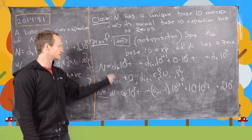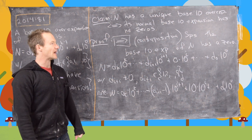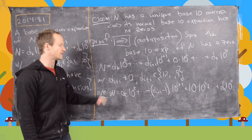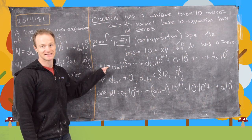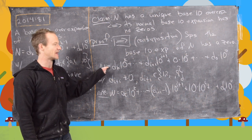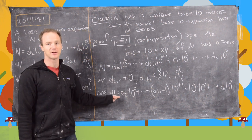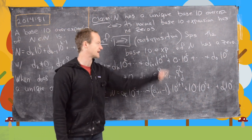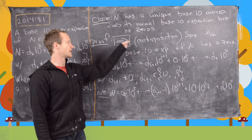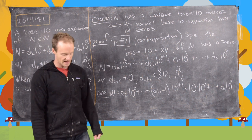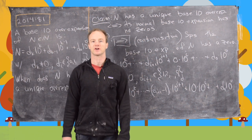So we now have two base 10 over-expansions of the number n: the standard base 10 expansion with a 0 in it, and the one we just constructed by exploiting that zero. That proves the forward direction of the claim.